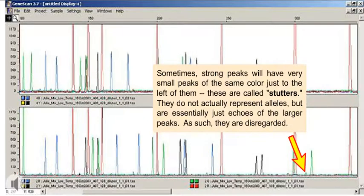Sometimes, strong peaks will have very small peaks of the same color just to the left of them. These are called stutters. They do not actually represent alleles, but are essentially just echoes of the larger peaks. As such, they are disregarded.